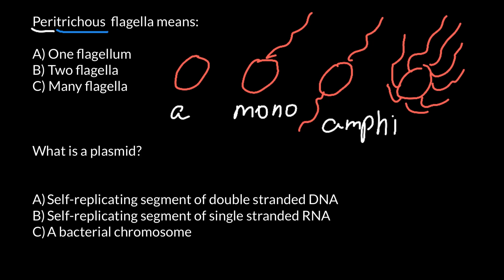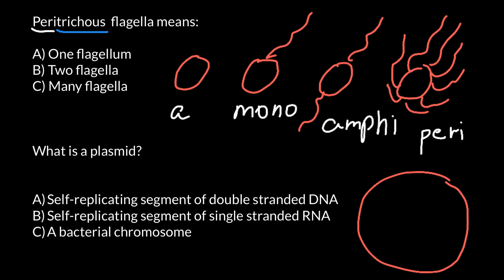The last type is Peritricus. To memorize it, think of a petri dish. If you put bacteria in the middle of a petri dish, it makes a colony and grows in every direction — this reminds me of Peritricus bacteria. 'Petri' and 'peri' are very similar. The correct answer is answer C: Peritricus bacteria is a type of bacteria with flagella on every side of its surface. By the way, E. coli also belongs to this type.